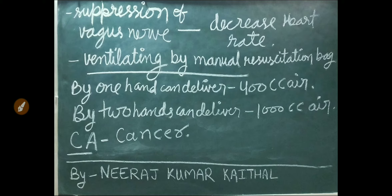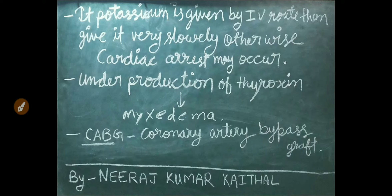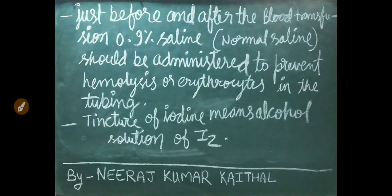CA abbreviation is used for cancer. If potassium is given intravenously, give it very slowly — otherwise cardiac arrest may occur. Underproduction of thyroxine causes myxedema. CABG stands for coronary artery bypass graft. Just before and after blood transfusion, 0.9% saline or normal saline should be administered to prevent hemolysis or destruction of erythrocytes in tubing.